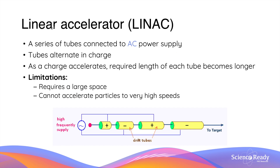Linear accelerators are also known as linacs. These accelerators consist of a series of tubes connected to an AC power supply, and the tubes will alternate in charge. As the charged particle passes through the tubes, the AC power supply is able to alternate and change the charge such that the charges of the tube will accelerate the charged particle.